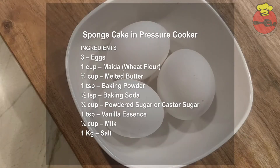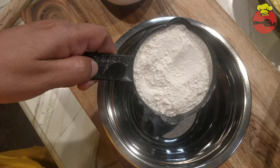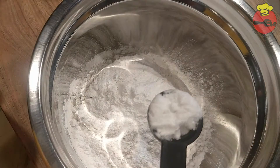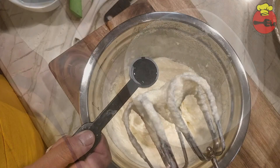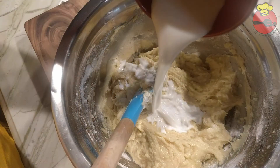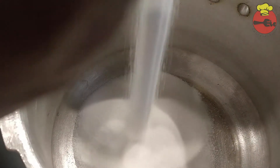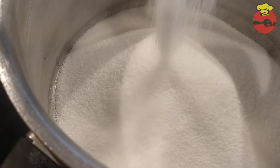Let's get to the ingredients we need for a sponge cake in a pressure cooker. Three eggs, one cup maida, three-fourth cup melted butter, one teaspoon baking powder, half teaspoon baking soda, three-fourth cup powdered sugar, one teaspoon vanilla essence, one-fourth cup milk, and 1 kilo salt. We need the salt to bake our cake — that is why it is in the list of ingredients.